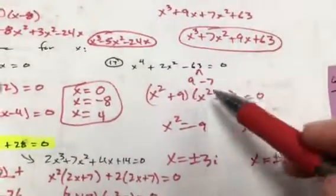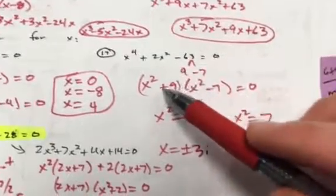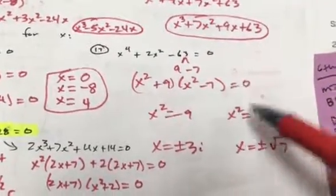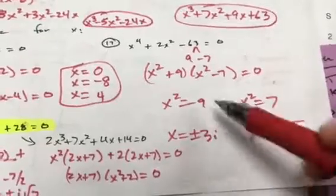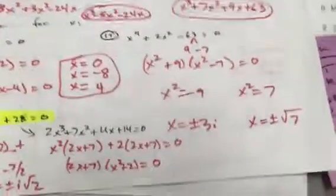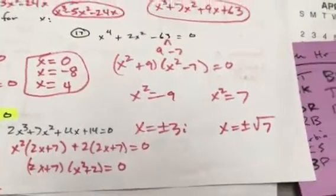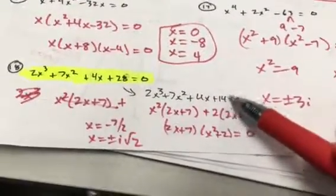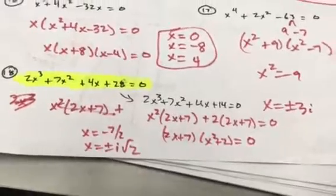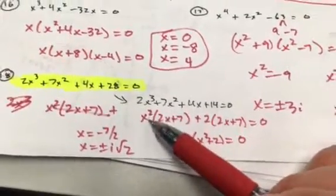For number 17, multiply 6 times negative 3 — differs by 2 — giving x² + 9 and x² − 7. Set each equal to zero: x² = negative 9 gives plus or minus 3i; x² = 7 gives plus or minus root 7. Again, I want to change number 18 — make that 28 a 14.